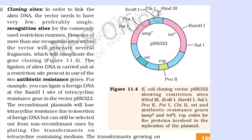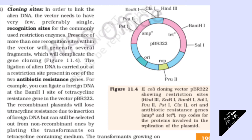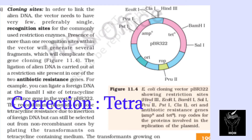Presence of more than one recognition site within the vector will generate several fragments, which will complicate the gene cloning. The ligation of alien DNA is carried out at a restriction site present in one of the two antibiotic resistance genes. For example, you can ligate a foreign DNA at the BamH1 site of the tetracycline resistance gene in the vector pBR322.